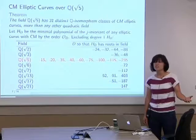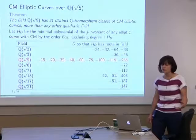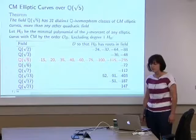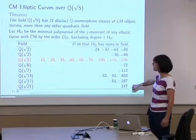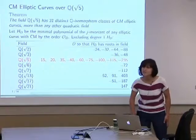Now let's get to the CM elliptic curves. The theorem is that this field has 31 distinct Q̄-isomorphism classes of CM elliptic curves — more than any other field. If we let H_D be the minimal polynomial of the j-invariant, then we have a table. We can look at the D such that the curve has CM by that order. Q(√5) is highlighted in red, and it has many more than the others.